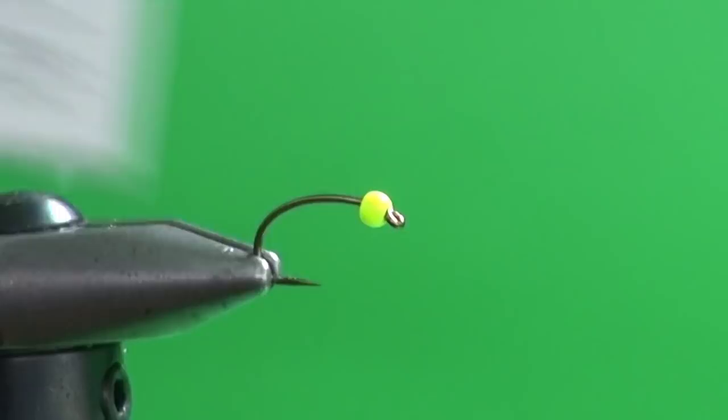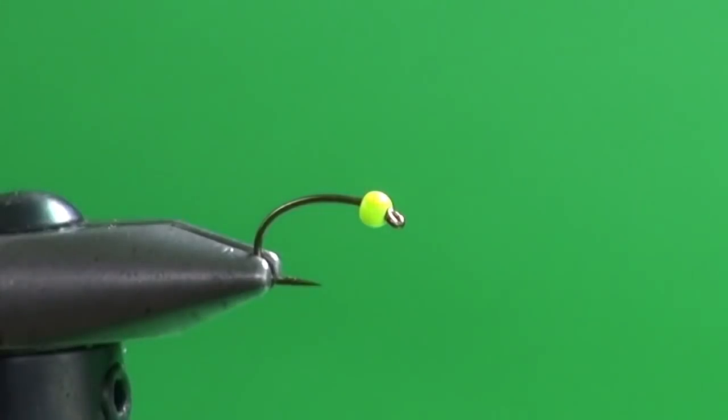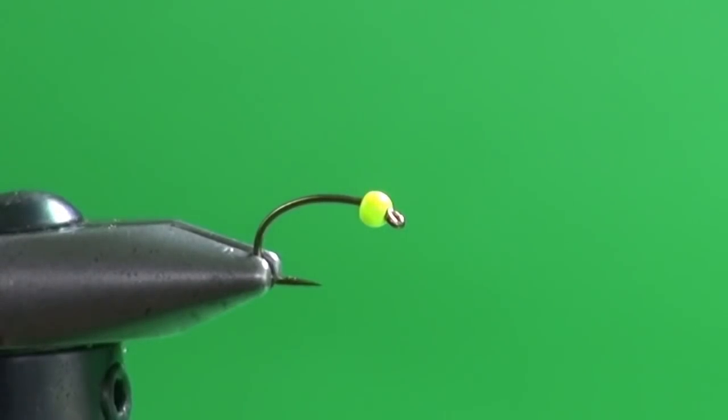We've got a Daiichi 1120 number 10 scud hook into the jaws of the vise. Probably tie this from 10 down through 14. And then we've got a 7/64th chartreuse bead on here. This is a brass bead. You could certainly use tungsten. For a number 10 I'd use a 7/64th, for a 12 or 14, a 3/32nds, and if you wanted to make a size 16 Orion, I would recommend a 5/64th.